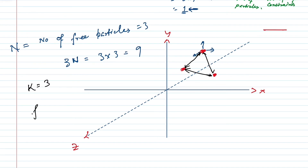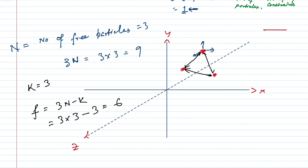Calculating the degrees of freedom: 3n − k = 3×3 − 3 = 6. So the degree of freedom is 6, meaning the minimum number of coordinates required is also 6. The number of generalized coordinates needed to describe the configuration of this system of particles is 6. I hope you have understood the concept of generalized coordinates and degrees of freedom and how they are related. If this video was helpful, share it with your friends, and if you are new to my channel please subscribe. Thank you for watching.